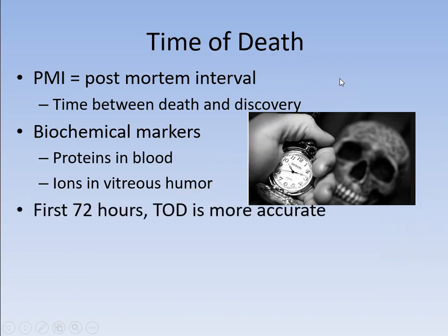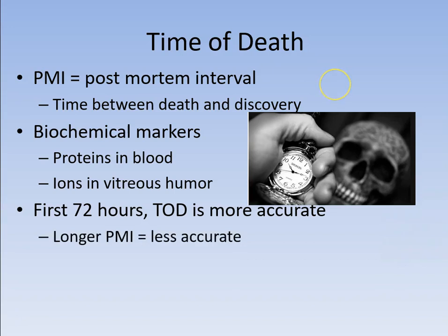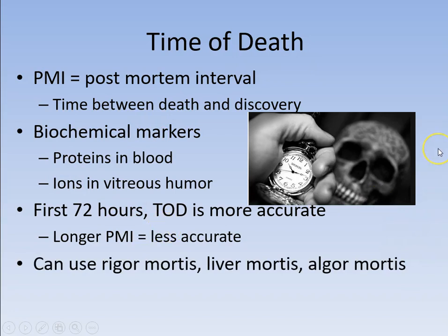Time of death is a little bit tricky. In the first 72 hours, the time of death estimate is more accurate — when you find the body quickly, there's a lot of information you can use to be much more accurate as to when that person died. The longer the time interval, the less accurate it's going to be. To help determine time of death, we can use three types of things: rigor mortis, livor mortis, and algor mortis.